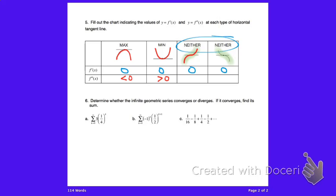When f double prime changes from negative to positive, for a continuous function f double prime equals zero at that point. Similarly, when f double prime goes from positive to negative, that's an inflection point — where f double prime equals zero or does not exist. For polynomial functions there are no sharp points, so f double prime always equals zero at inflection points.